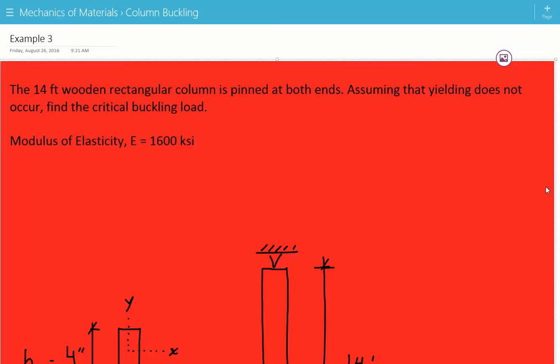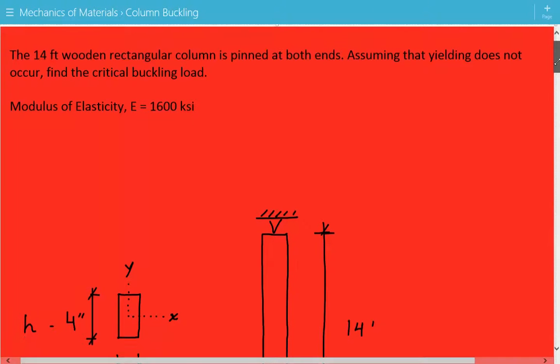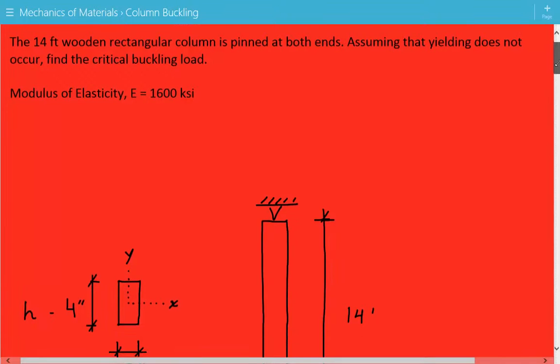The problem statement that we have is the 14 feet wooden rectangular column is pinned at both ends. Assuming that yielding does not occur, find the critical buckling load. The modulus of elasticity that we're assuming for the wood is equal to 1600 ksi.